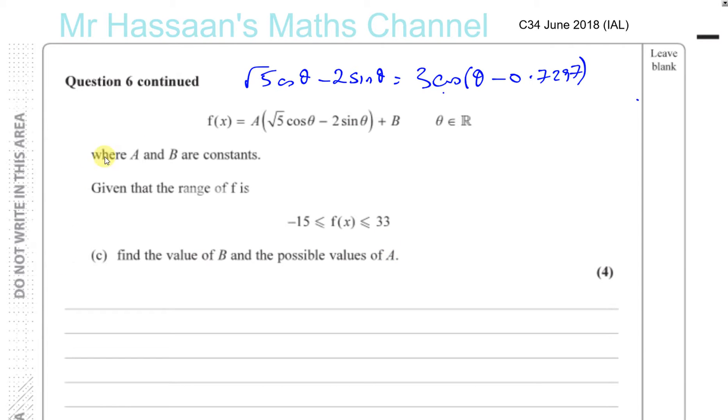Okay, let's have a look at this one. First of all, let's take f of x and rewrite it in terms of what this is equal to. This is equal to 3A times cosine of theta minus 0.7297, plus B. The A is multiplied by this, not by the B.